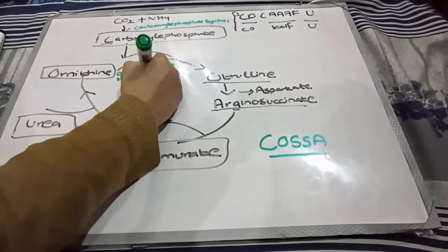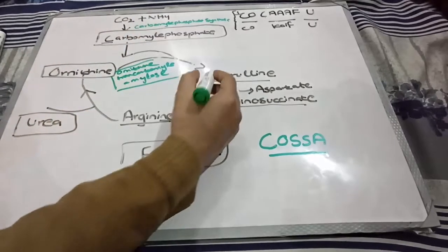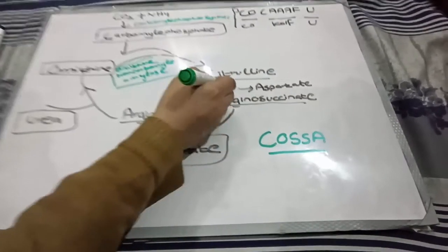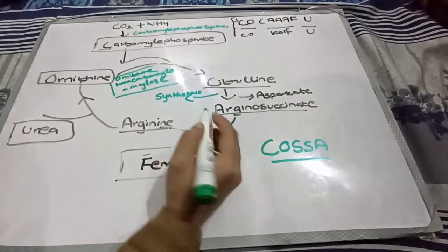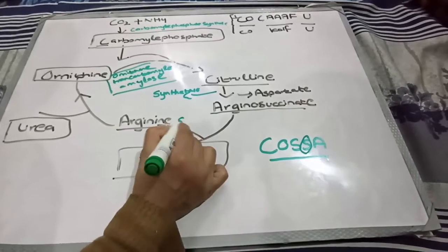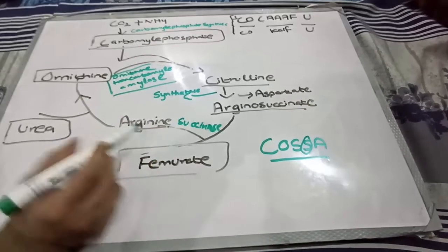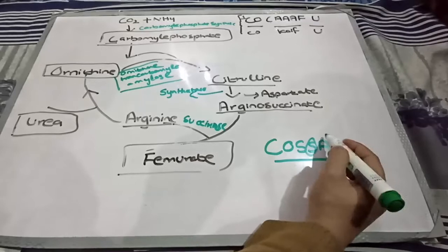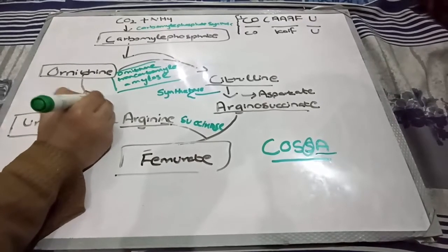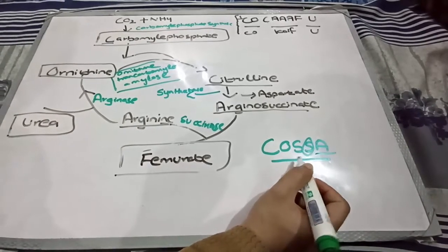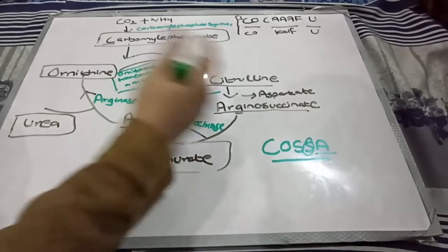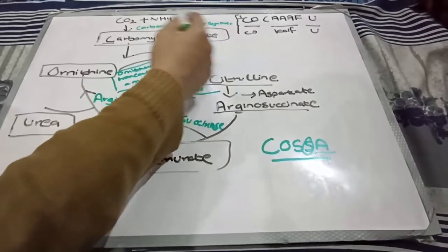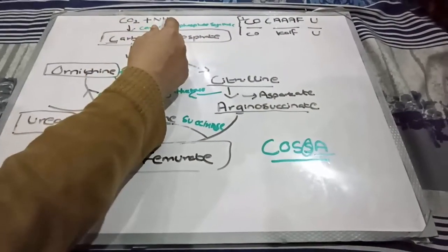With the help of this enzyme, ornithine will combine with carbamoyl phosphate and will form citrulline. This citrulline will be converted into arginosuccinate by the help of an enzyme which is called synthetase. The other letter in this mnemonic was S for synthetase. The product arginosuccinate was converted into fumarate and arginine by the help of enzyme succinase — the other mnemonic, succinase. Arginine was further divided into two compounds, ornithine and urea, by the help of the last enzyme, which is called arginase. With the help of this mnemonic, we have easily mentioned all the enzymes which will take part in the formation of urea.